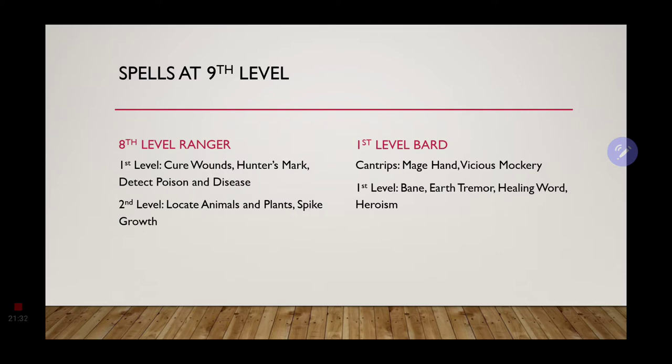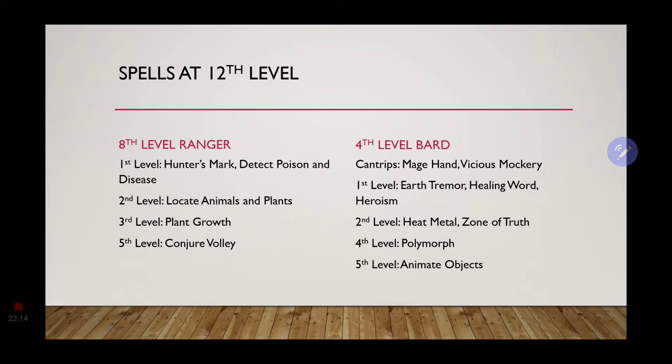At ninth level, we get our Bard spells, which will be Mage Hand, Vicious Mockery, Bane, Earth Tremor, Healing Word, and Heroism. For Mage Hand, it is to help with your cooking. Say you have a pot somewhere on the other side of the room that you need to stir. Use your Mage Hand and start stirring what's in that pot, or grab a utensil from another side of the room. That is what your Mage Hand is going to be for. It is not an attack, so it is perfectly fine. At 12th level, we get even more spells to go with. Plant Growth and Conjure Volley for the ranger. And for the Bard, we have Heat Metal, Zone of Truth, Polymorph, and Animate Objects.